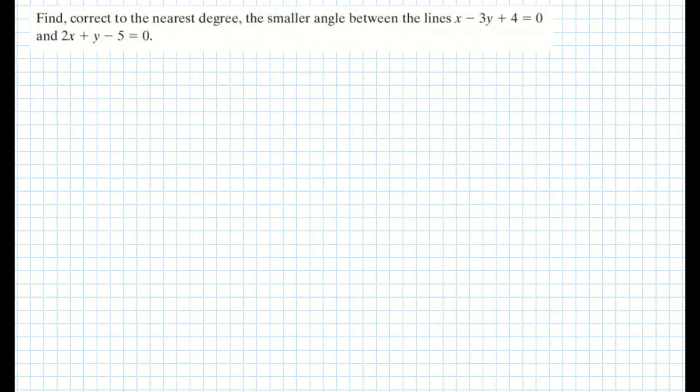So this question is saying find correct to the nearest degree the smaller angle. So in other words, the acute angle between these two lines.